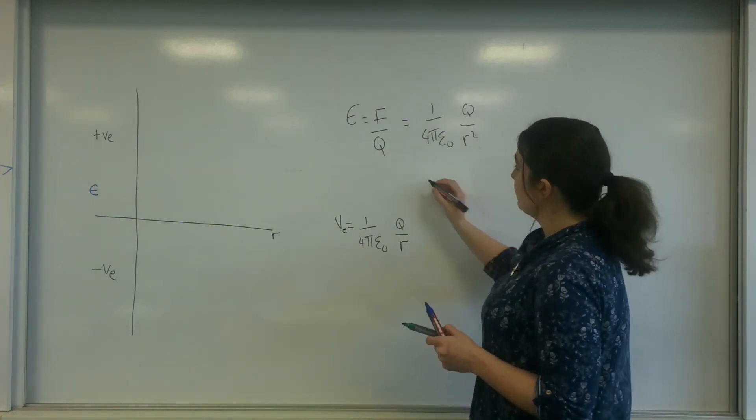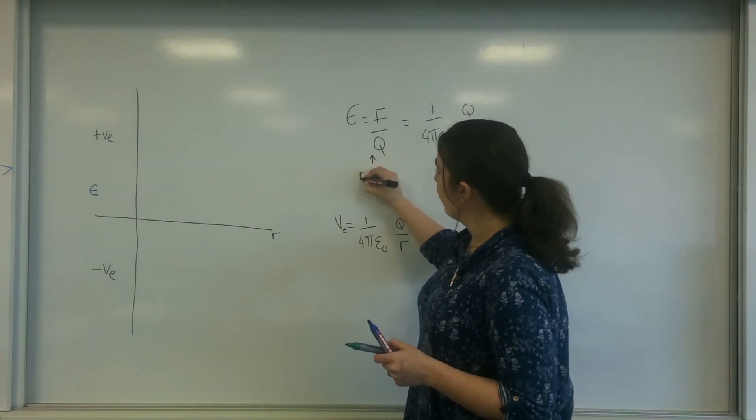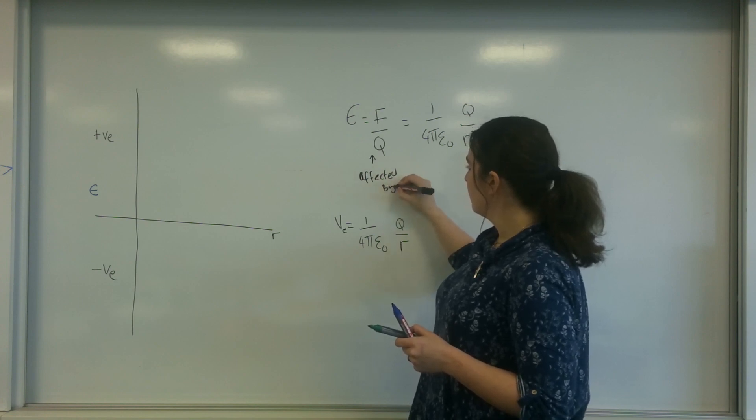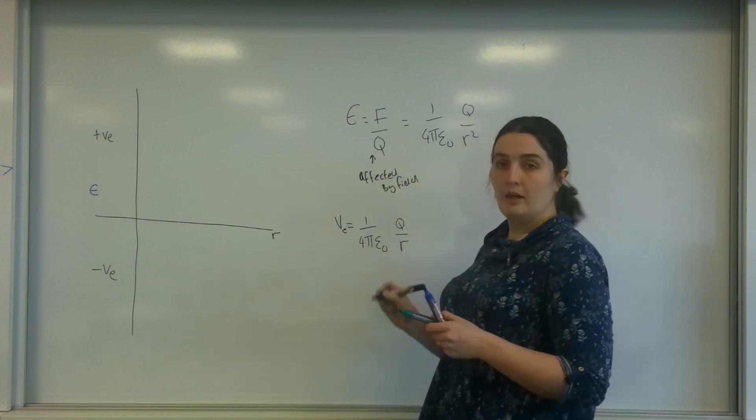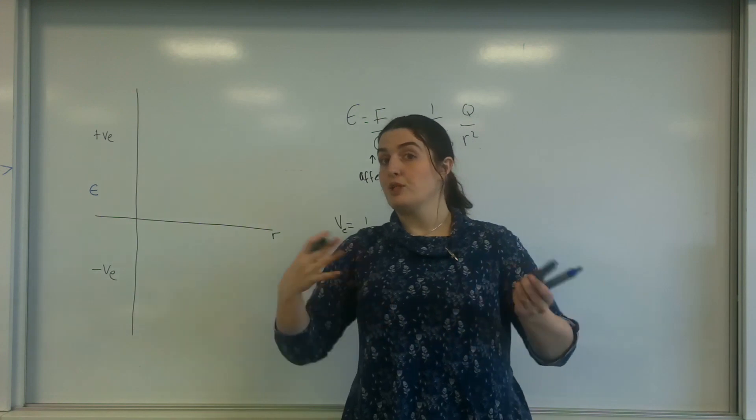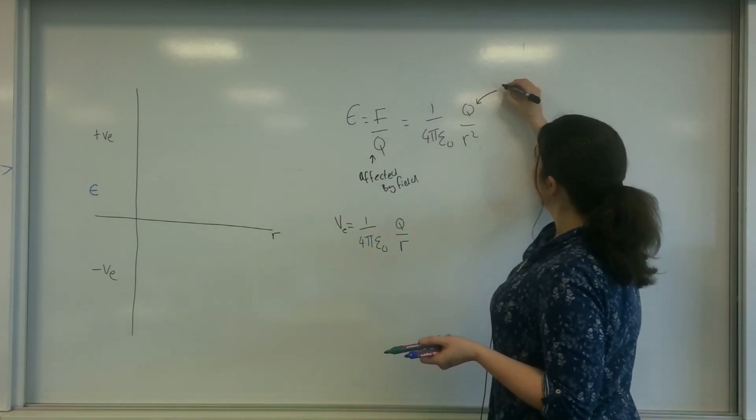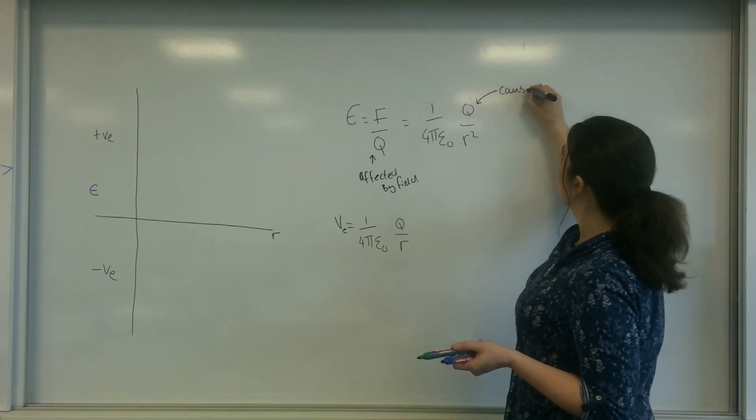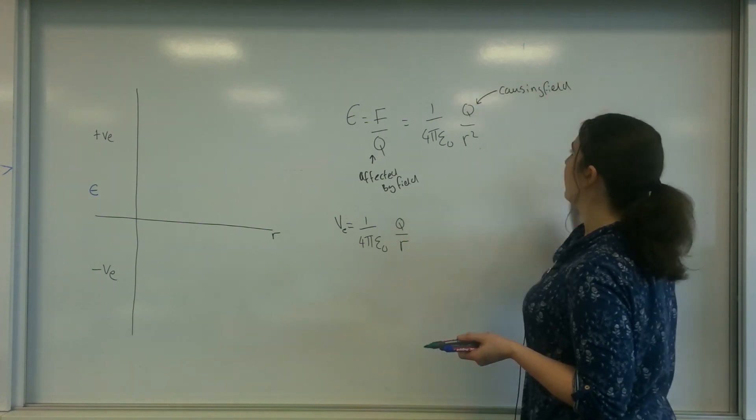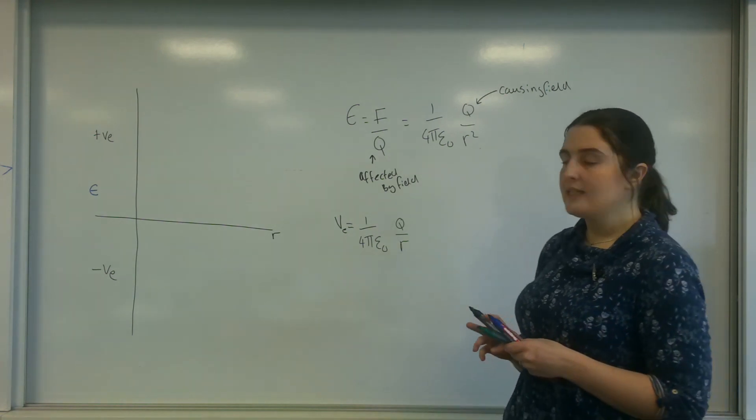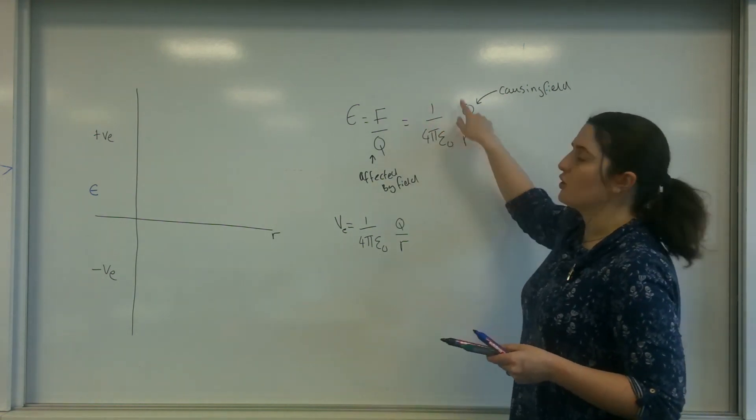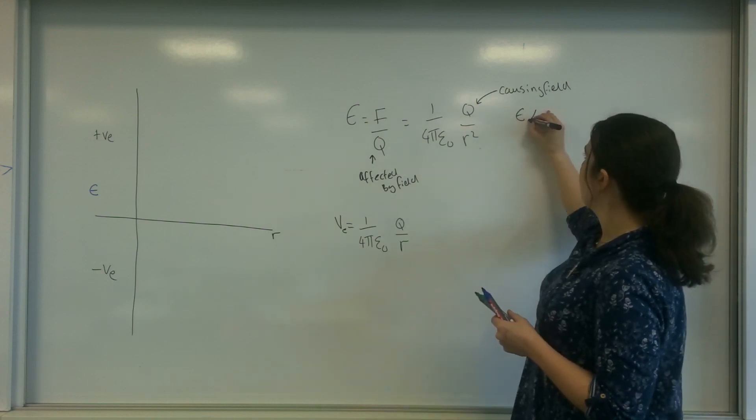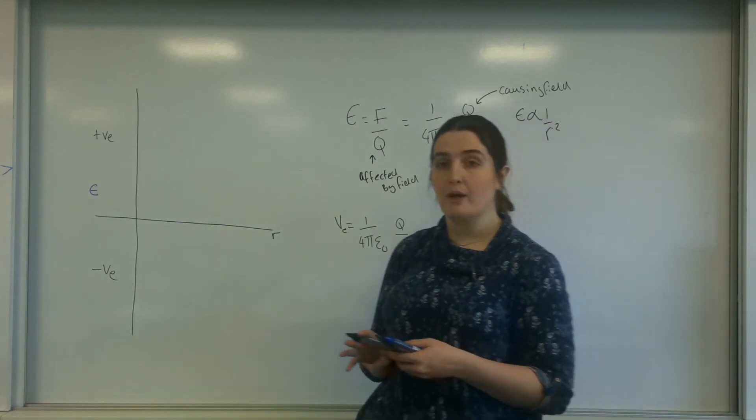And this is important. This q here is the thing affected by the field. So it's the force that an object in the field will feel, and this charge here would be the thing causing the field. As you can see here, if this is a constant and if my charge is constant that's causing the field, I have a relationship that E is proportional to 1 over r squared, which is also known as the inverse square rule.